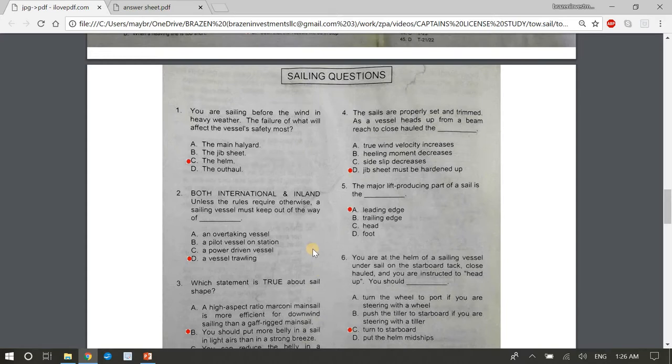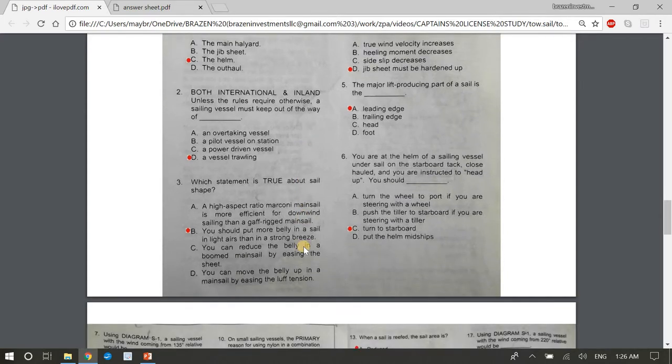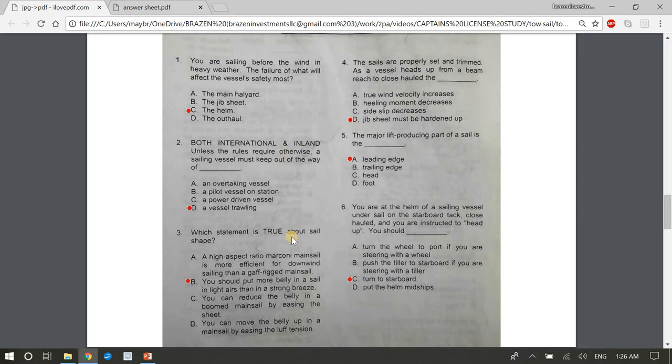Number two, both international and inland, unless the rules require otherwise, a sailing vessel must keep out of the way of... The answer is D, a vessel trawling. This goes back to the hierarchy of who has the right of way, so to speak. Number three, which statement is true about sail shape? The answer is B, you should put more belly in a sail in light airs than in a strong breeze. Number four, the sails are properly set and trimmed. As a vessel heads up from a beam reached to close hauled, the blank. Answer is D, jib sheet must be hardened up. Number five, the major lift producing part of the sail is the blank. Answer is A, the leading edge.